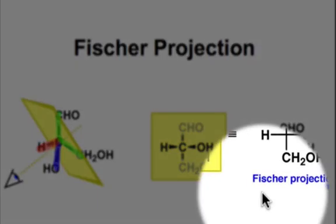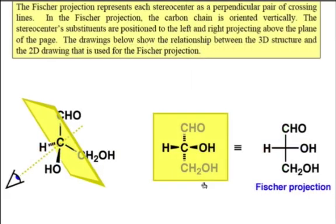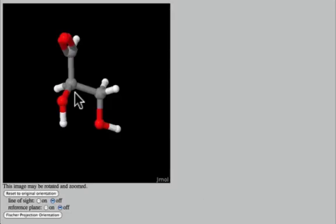The Fischer projection is a second way to represent three-dimensional geometry. Here we're going to draw the carbon backbone vertically, and we'll draw the substituents horizontally.